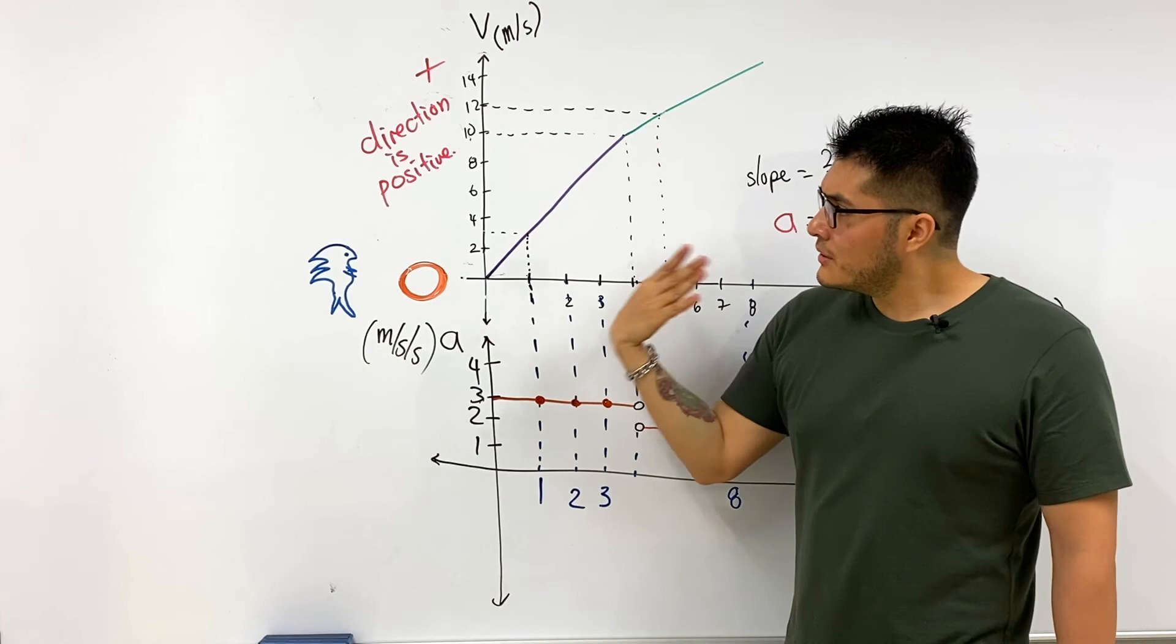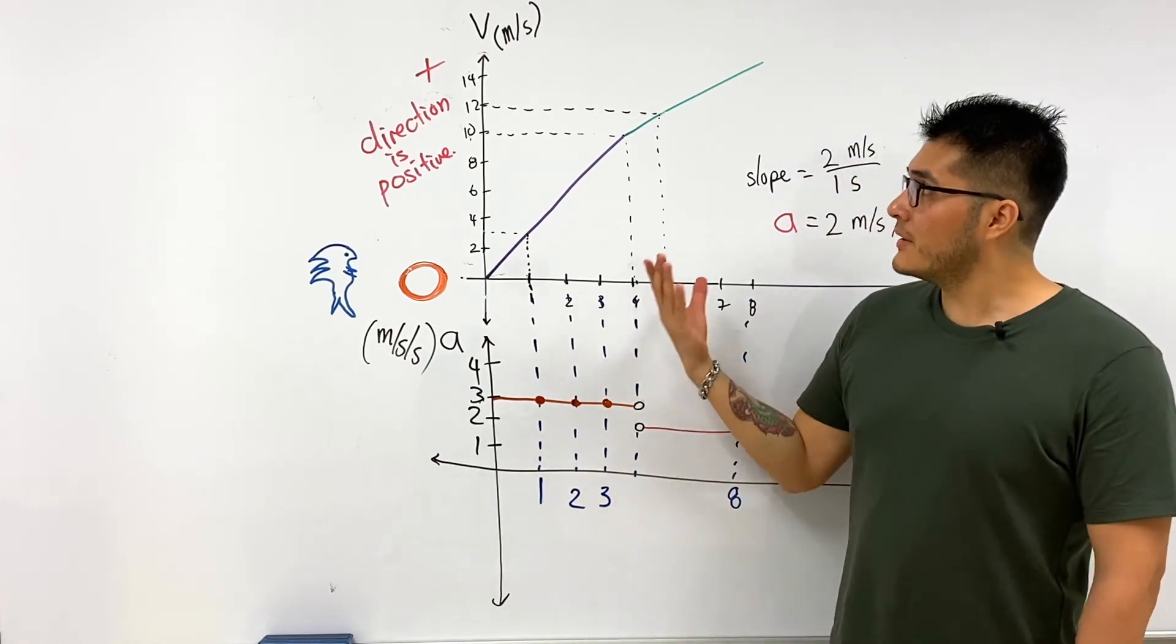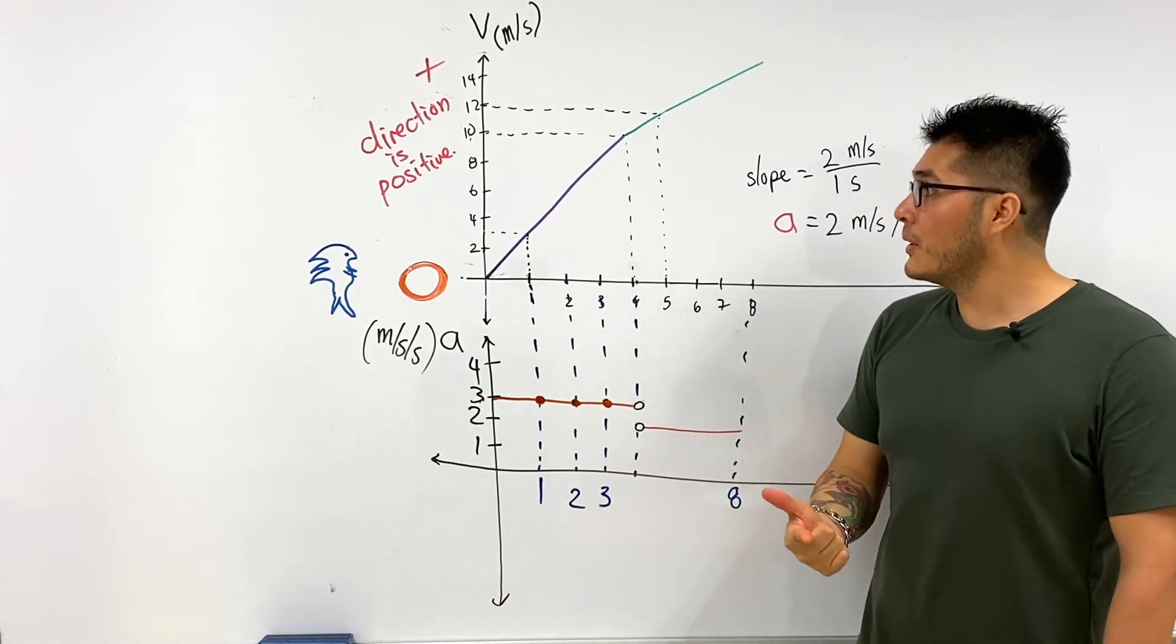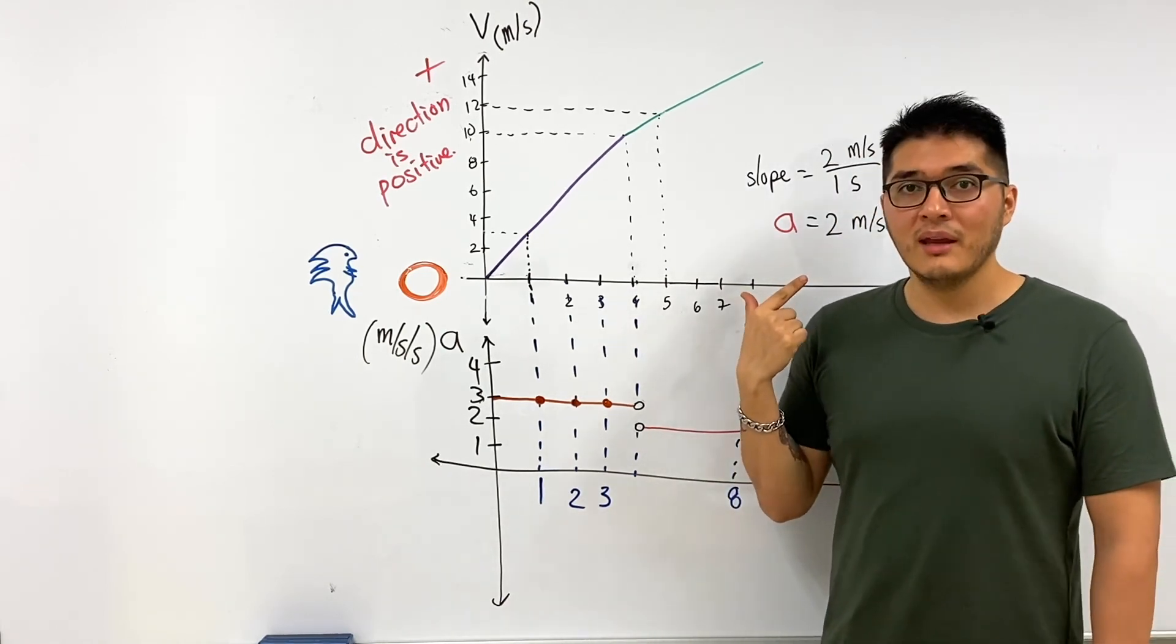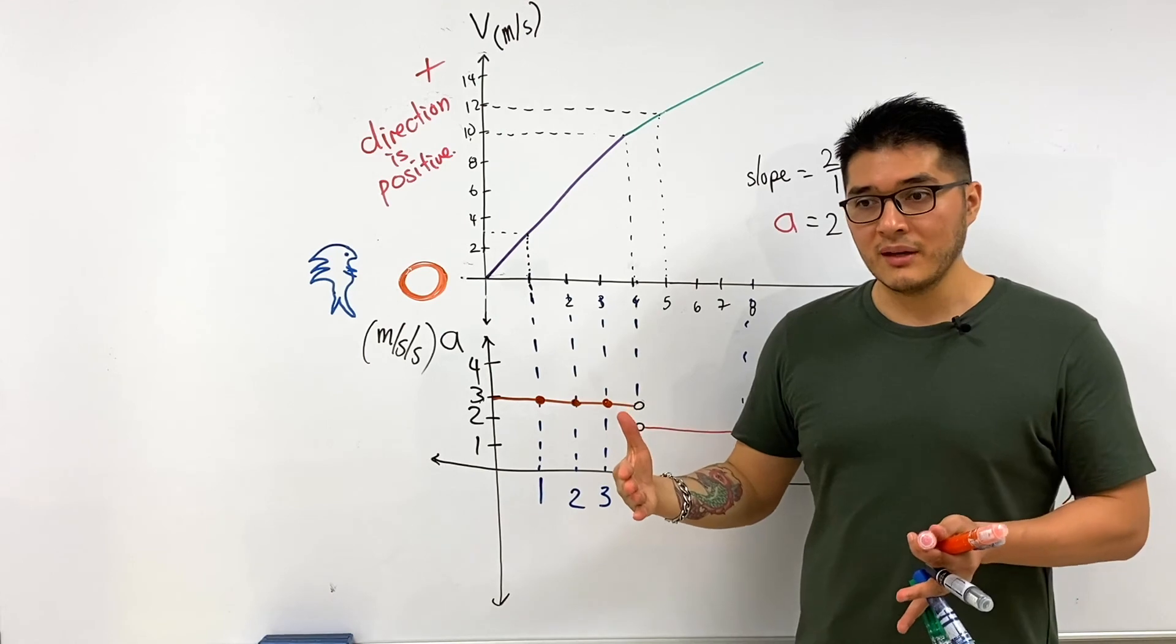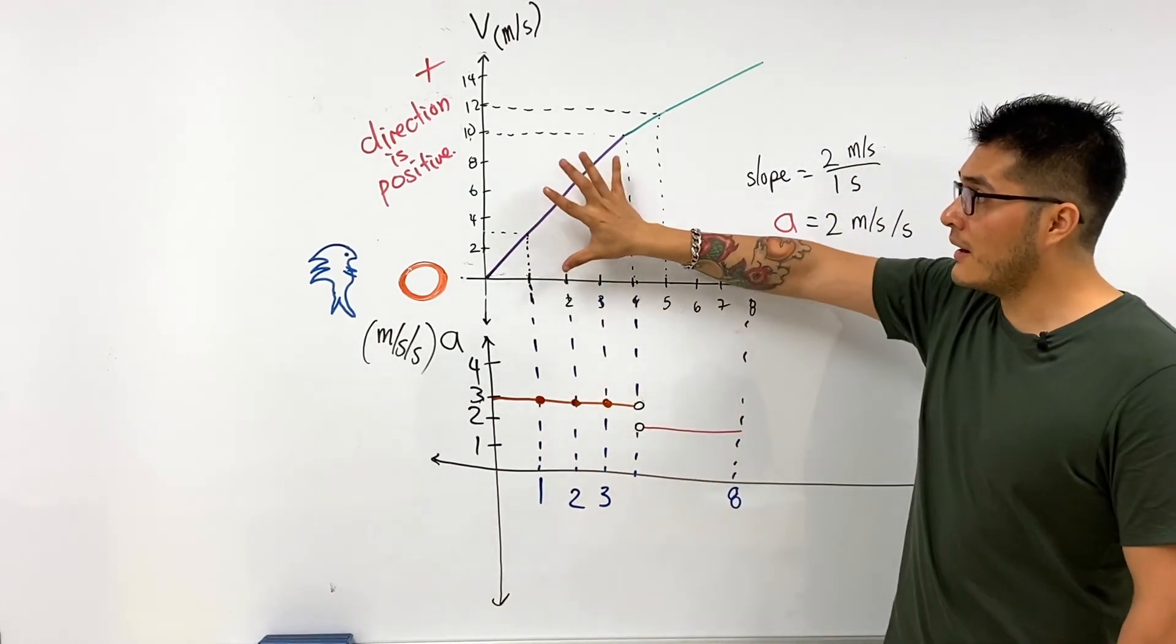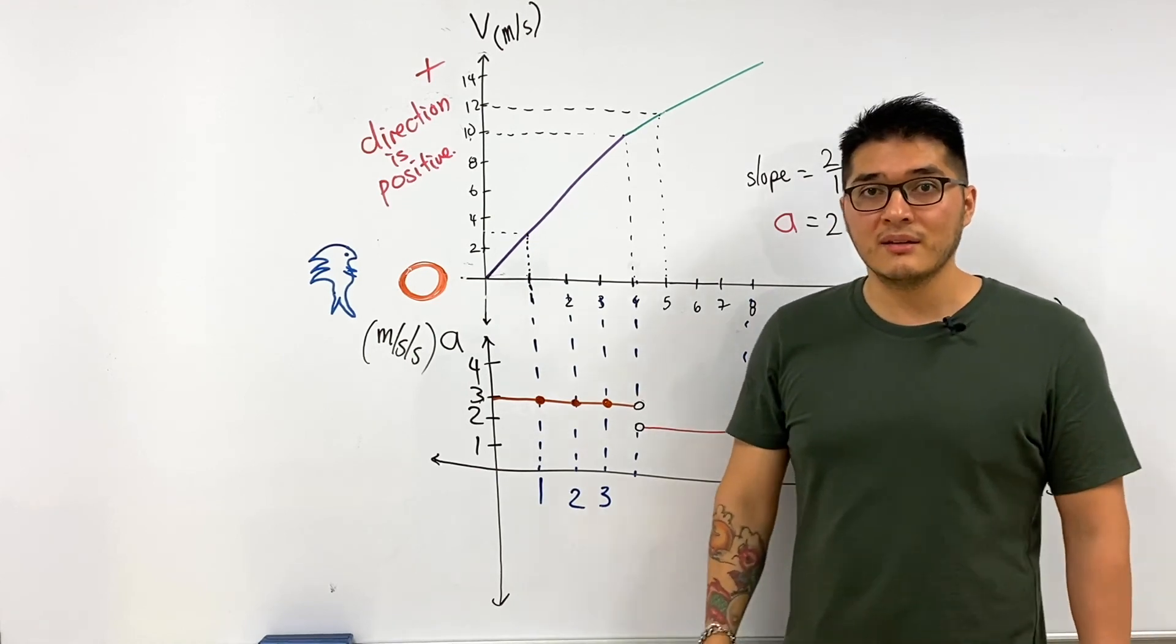But we still fully haven't described this velocity time graph. Because now we know how quickly it is moving, what direction it is moving, but we don't know how much distance was covered in each period of time. So that's what I'm going to show you in the next video, which is going to be how to calculate the distance traveled in each time interval.